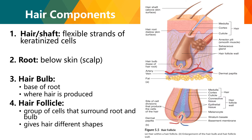Next, hair components. The hair shaft is the flexible strand of keratinized cells found above the skin surface. The root is below the skin within the scalp. The hair bulb is the base of the root where hair is produced. The hair follicle is the group of cells that surrounds the root and bulb and gives hair its different shapes.